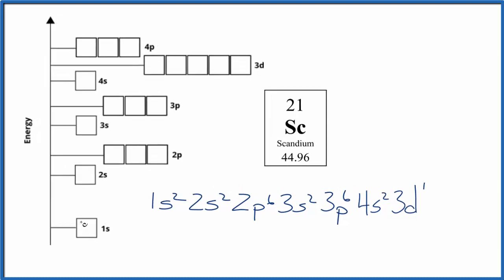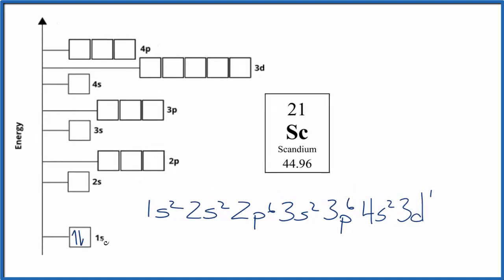So we start off 1s², we put both of those in opposite directions in the 1s, 2s², 2p⁶, we spread them out before we pair them up. Then we have 3s², 3p⁶, 4s², and then we have that 3d¹, which we'll put right here.